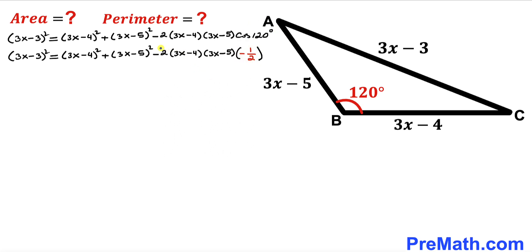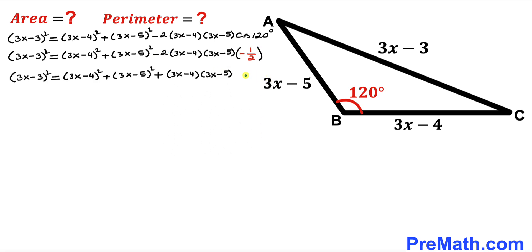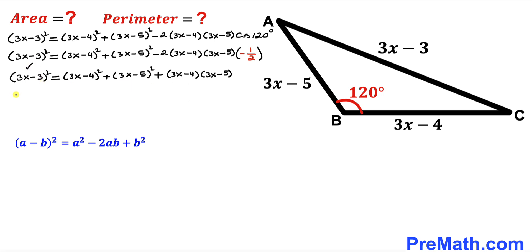Notice that negative 2 times negative 1 divided by 2 gives us positive 1. Now let's recall the identity: (a minus b)² equals a² minus 2ab plus b². We are going to apply this identity to each of the four binomials in our equation — both on the left-hand side and on the right-hand side.